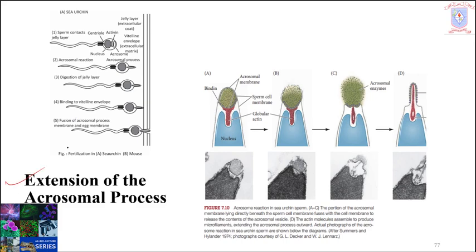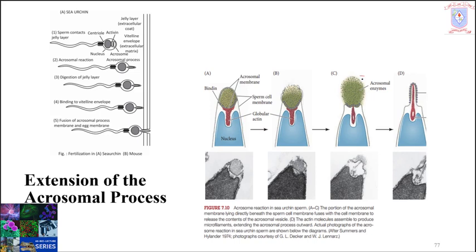Continuing with these events, the extension of the acrosomal process takes place. Here you can see the globular actin molecule getting extended outside as a spike. The acrosomal process is a spike-like structure of actin on the head of the sperm in several animals. The acrosome at the base of the acrosomal process is a sac of hydrolytic enzymes designed to facilitate penetration through the gelatinous coat of the egg.